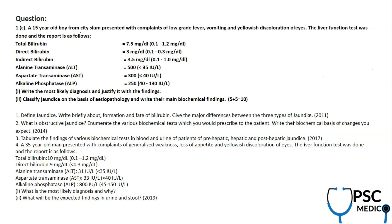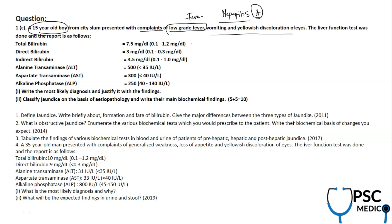Looking at the clinical findings: a 15-year-old boy from a city slum presented with low-grade fever, vomiting, and jaundice — indirectly suggesting hepatitis. A slum setting points to food and water contamination leading to viral hepatitis A, and the LFT results are also supporting the conclusion of hepatic jaundice.